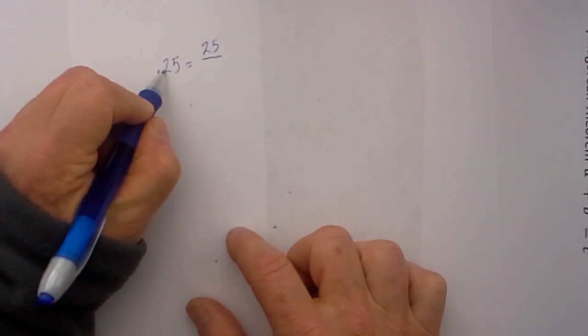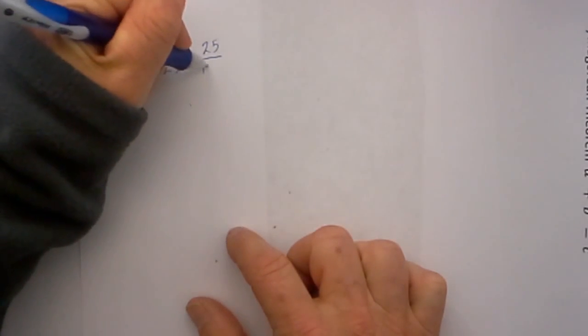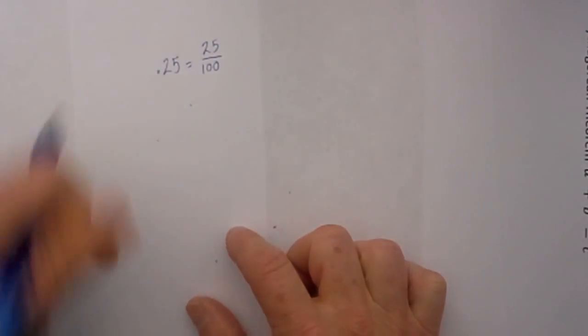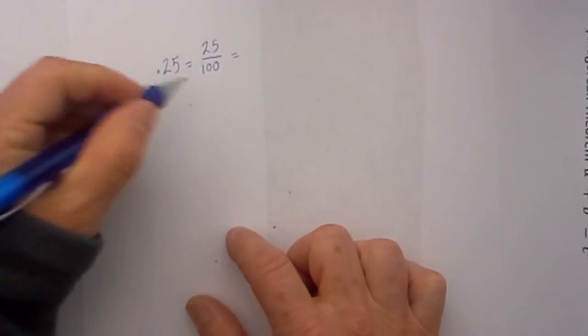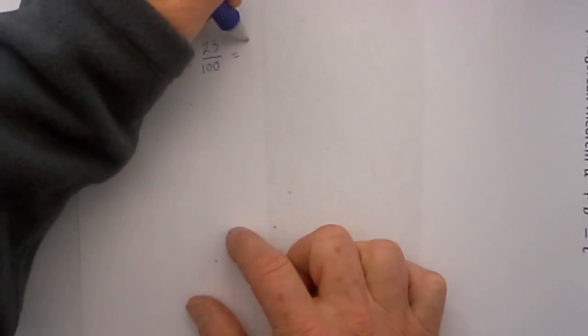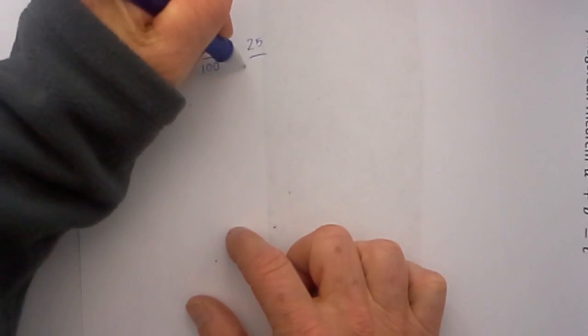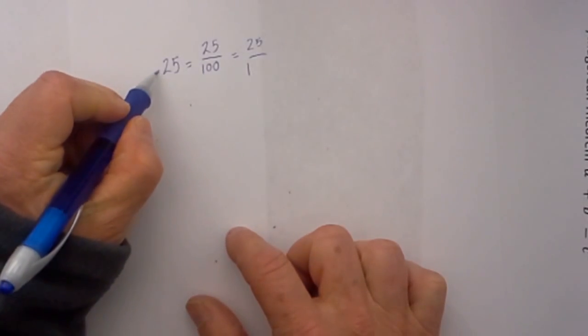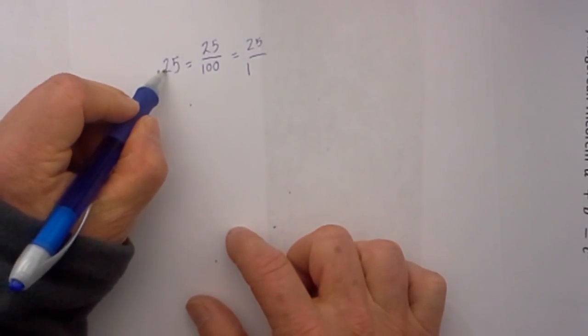Now if you would like I will show you another method. You can just place it - .25 becomes 25. Write a one and then count how many places are to the right which is 1, 2.